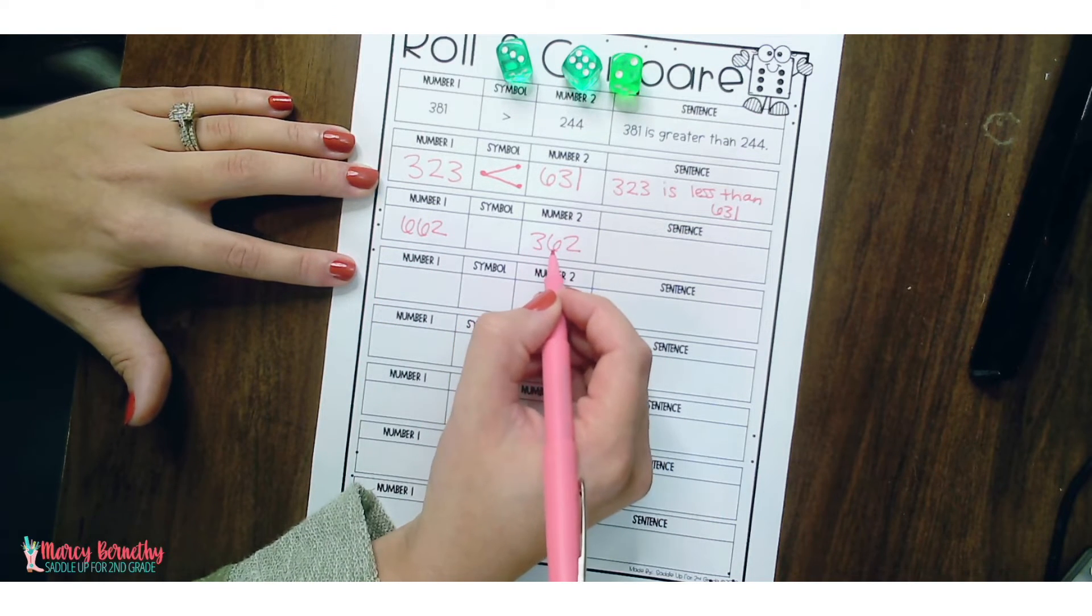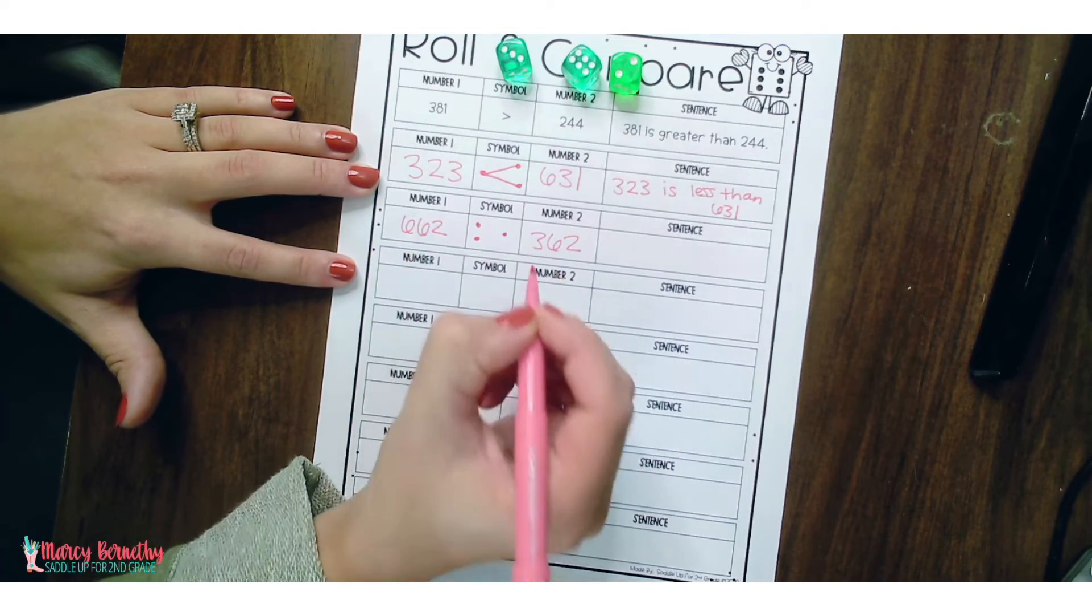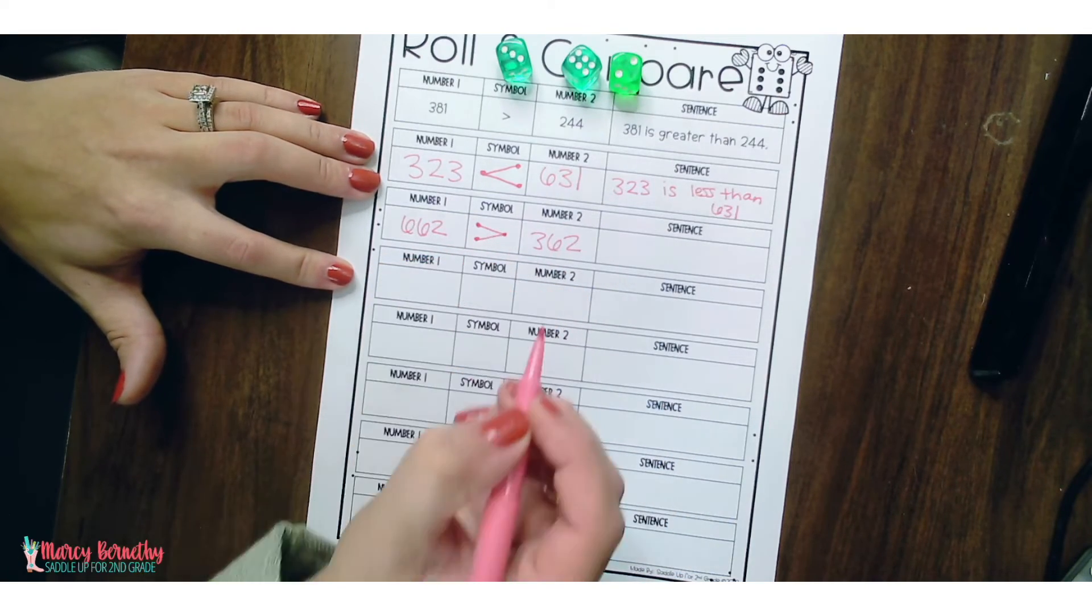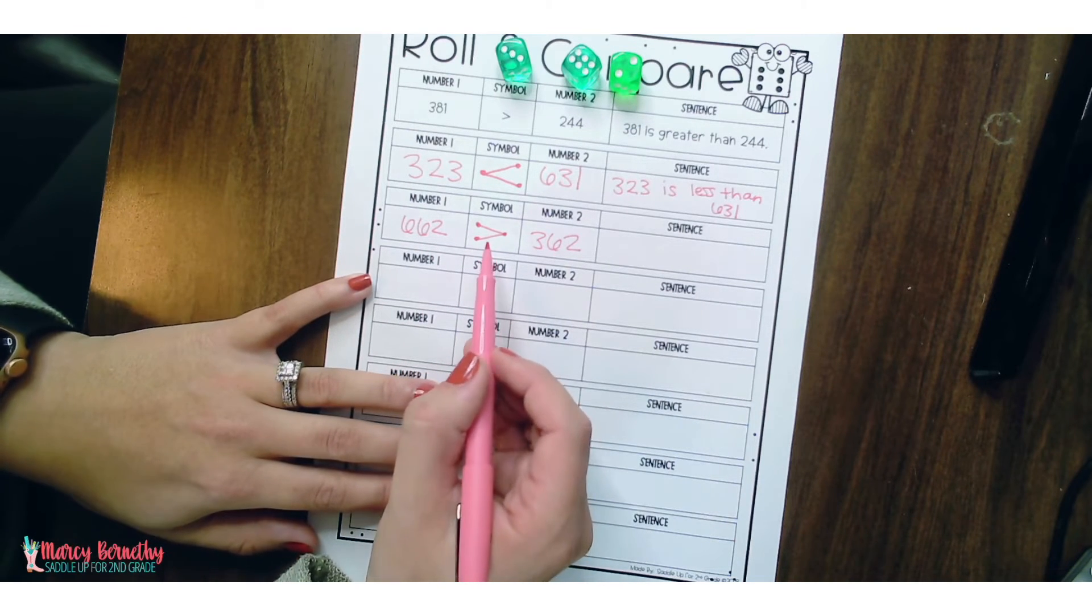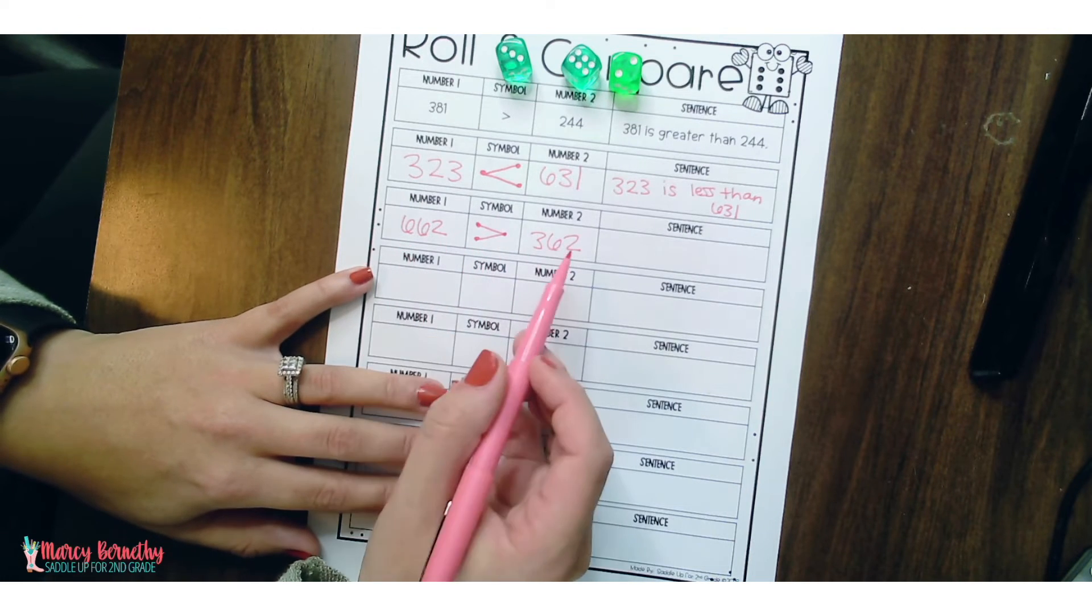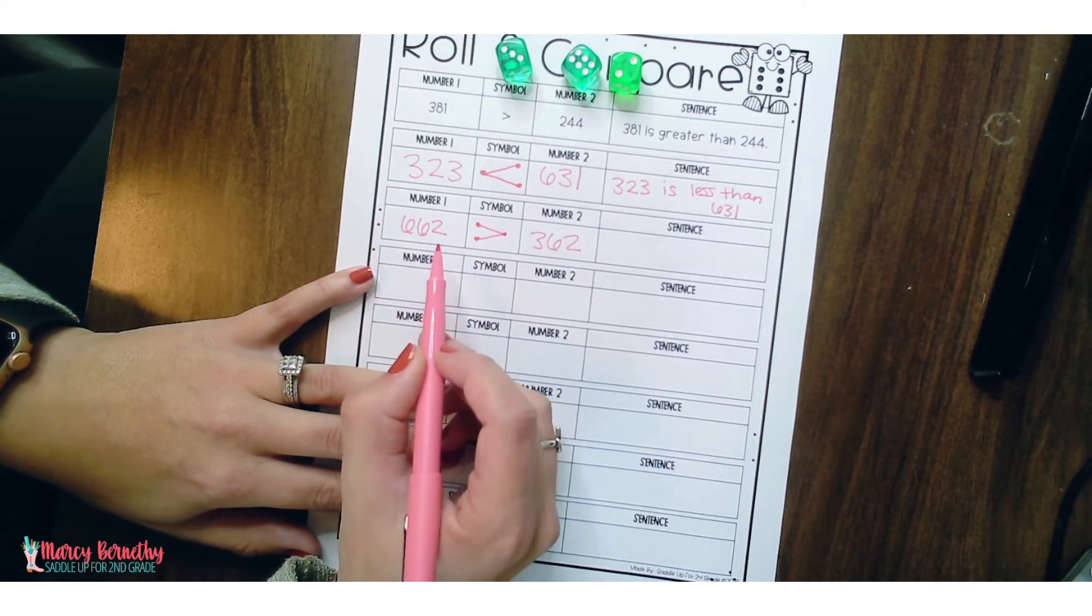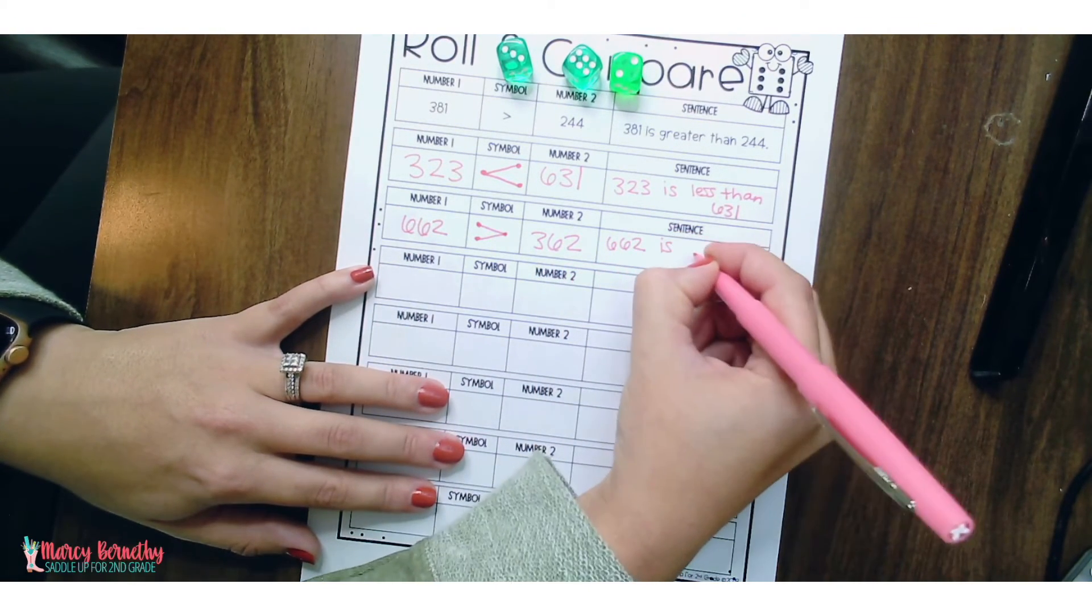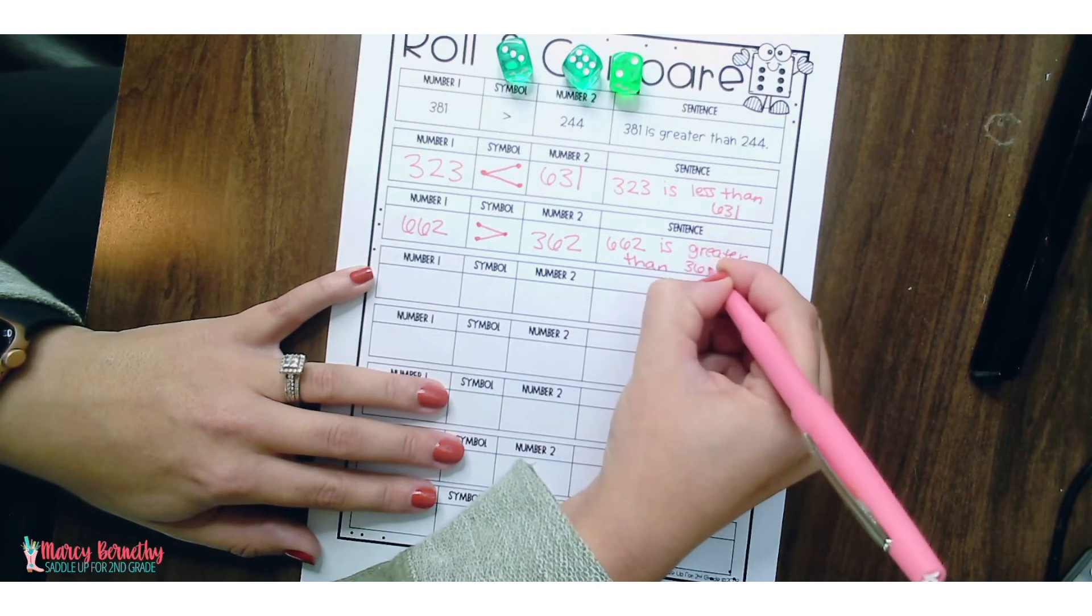662, 362. The larger number is going to get two dots. The smaller number is going to get one and then they are going to draw two lines to compare. Now this time the symbol was drawn in the opposite direction. This symbol stands for greater than. The first number in the comparing number sequence, the first number is greater. So 662 is greater than 362.